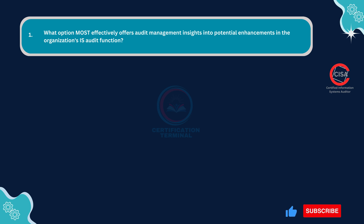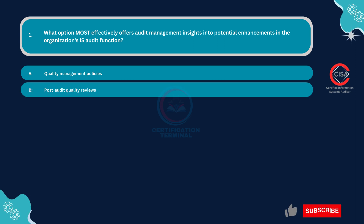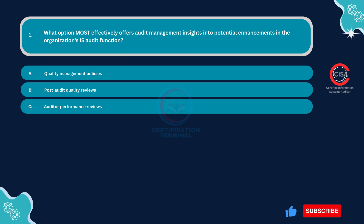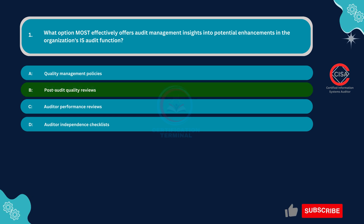Question 1: What option most effectively offers audit management insights into potential enhancements in the organization's IS audit function? Option A: Quality management policies. Option B: Post-audit quality reviews. Option C: Auditor performance reviews. Option D: Auditor independence checklists. The correct answer is Option B: Post-audit quality reviews.